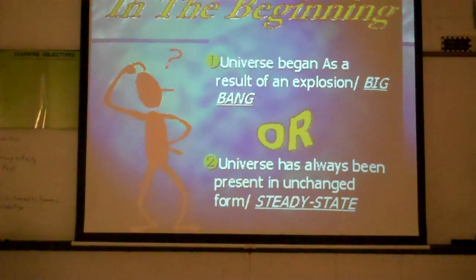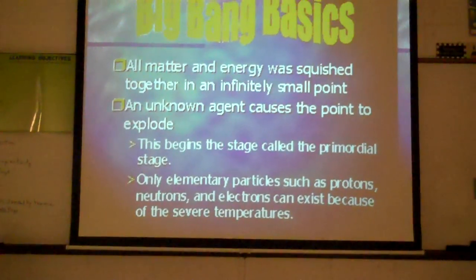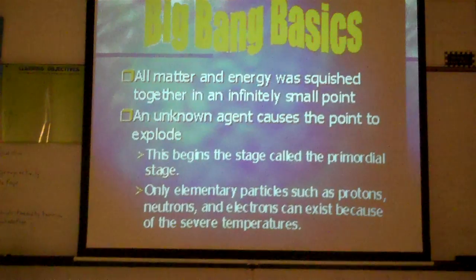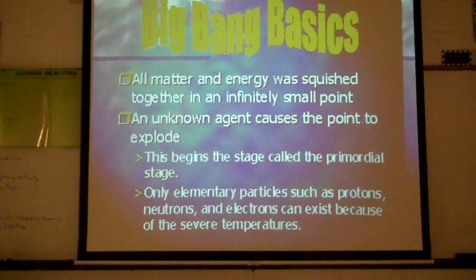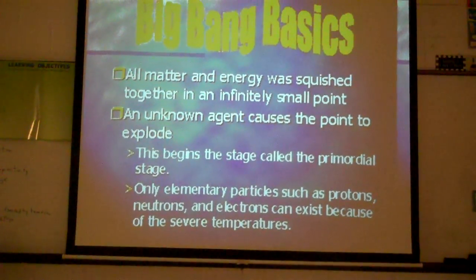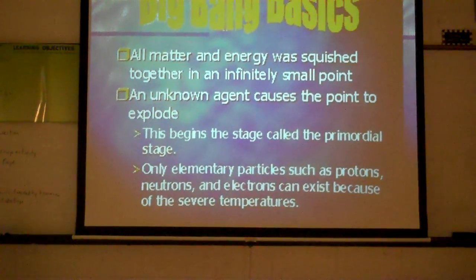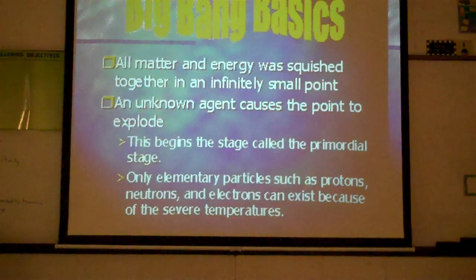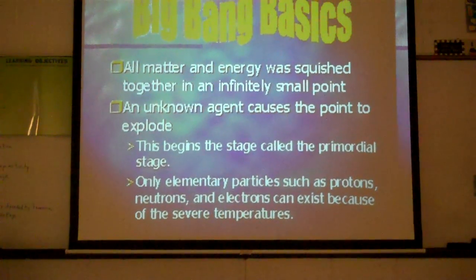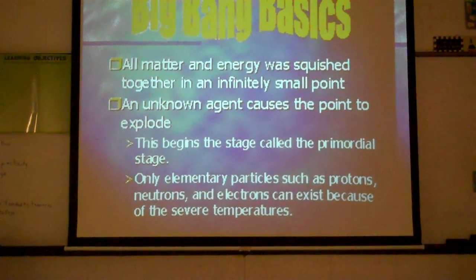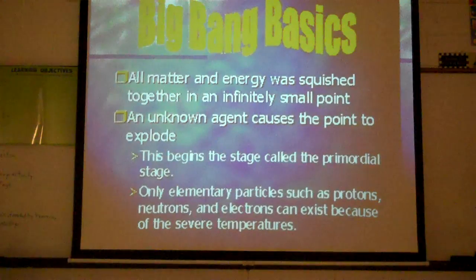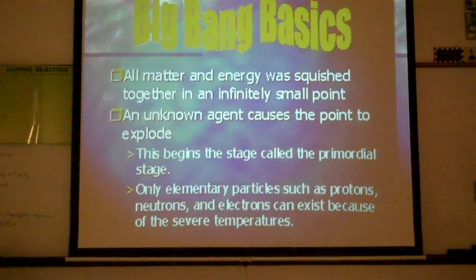For the Big Bang basics, all matter and energy during the Big Bang period was squished together in an infinitely small point — everything that existed in the universe was squished together at one time. There was an unknown agent that caused the point to explode, and that beginning stage is called the primordial stage of the Big Bang Theory. That point exploded into the primordial stage, and we had three elementary particles that existed: protons, neutrons, and electrons — those were the only three things that existed because of the severely high temperatures in the universe.